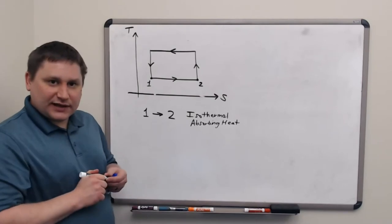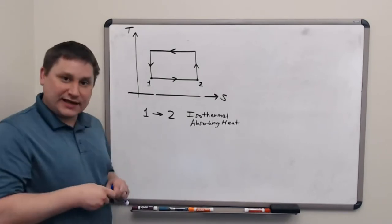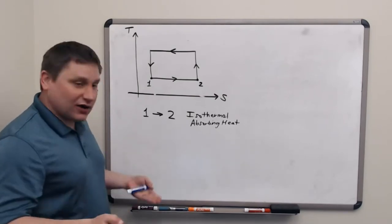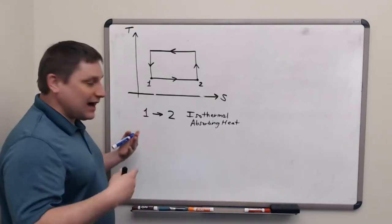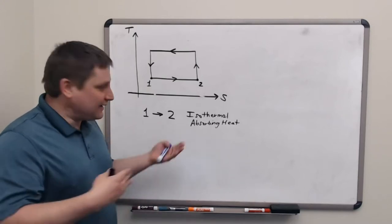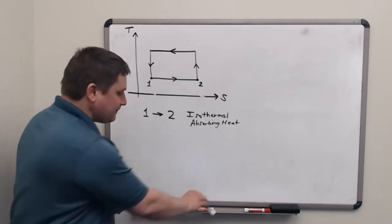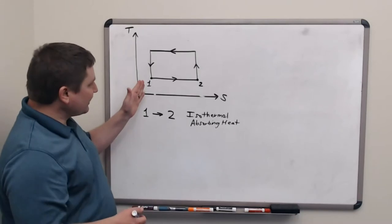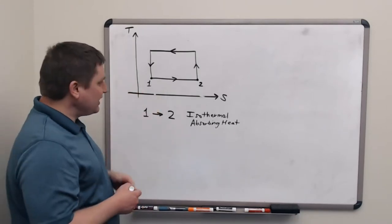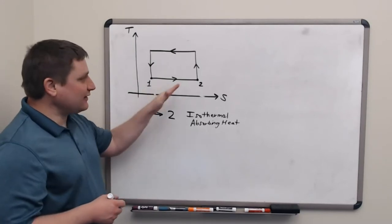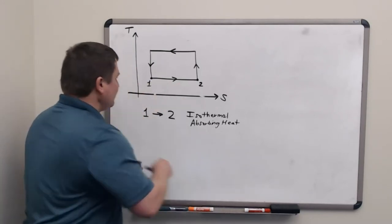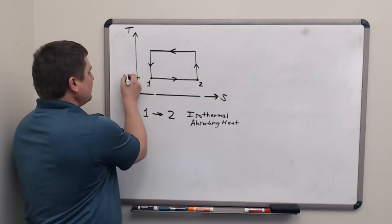One thing that we know about absorbing heat is that the second law of thermodynamics tells us that we can only absorb heat from an object that is hotter than we currently are. So when this working substance moves from 1 to 2, it must be in contact with the reservoir that has a temperature that is higher than T1.